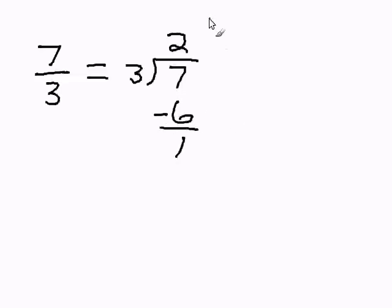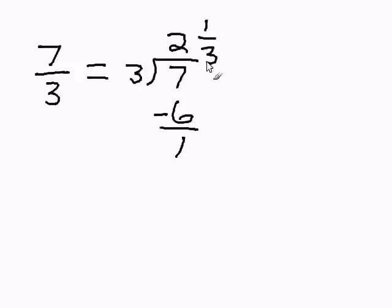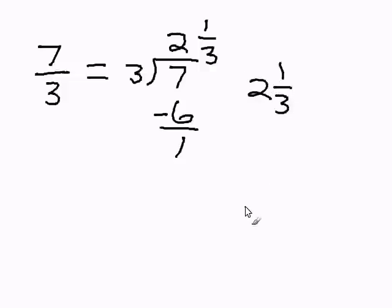Our remainder becomes the numerator, and the divisor, 3, becomes the denominator. Our final answer is 2 and 1 third. This completes our problem.